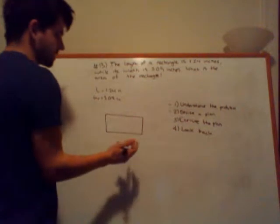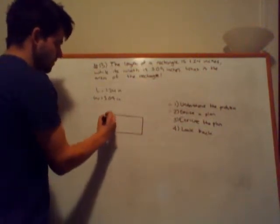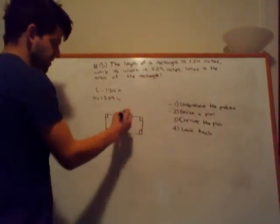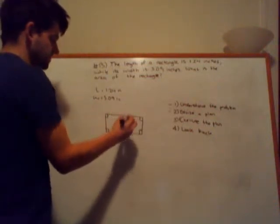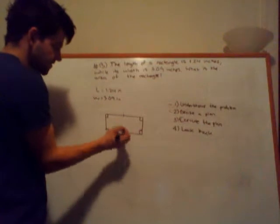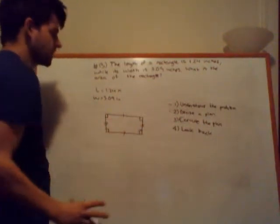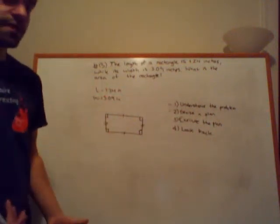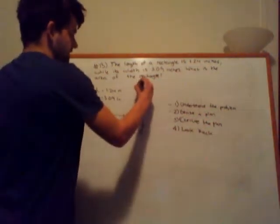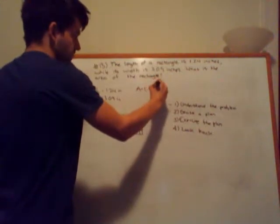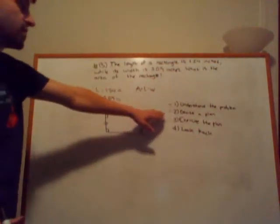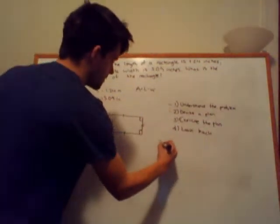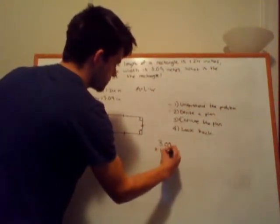Now, remember, a rectangle is a four-sided polygon where all four angles are 90 degrees with two pairs of parallel sides. Meaning that these two sides are congruent and these two sides are congruent. Now, what we're going to do is devise a plan. So, we're going to take these two values and we're going to solve for the area. Recall that the area of a rectangle is equal to the products of its length times its width. So, then we'll use this equation to execute the plan of solving for the area. So, we're going to do 3.09 times 1.24.